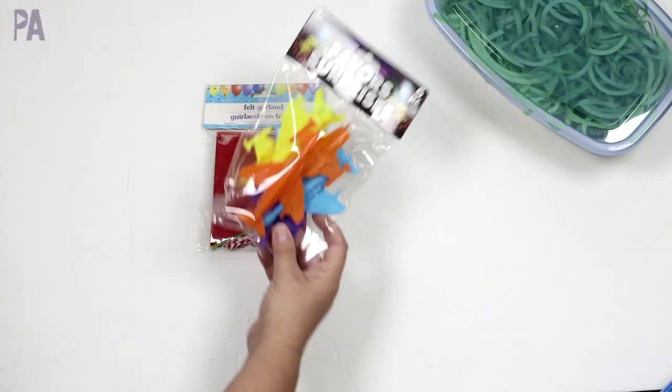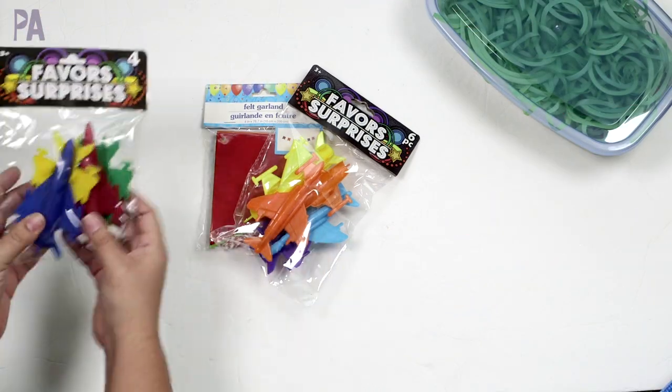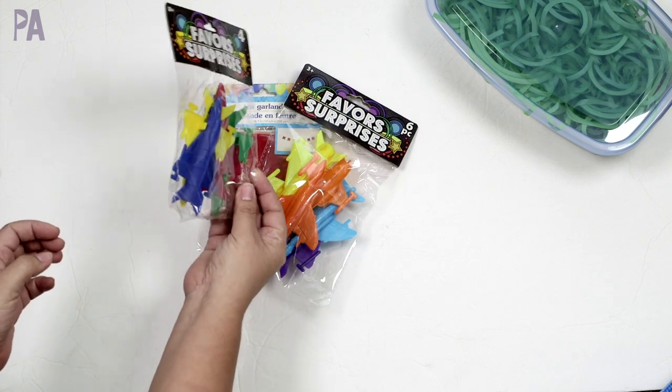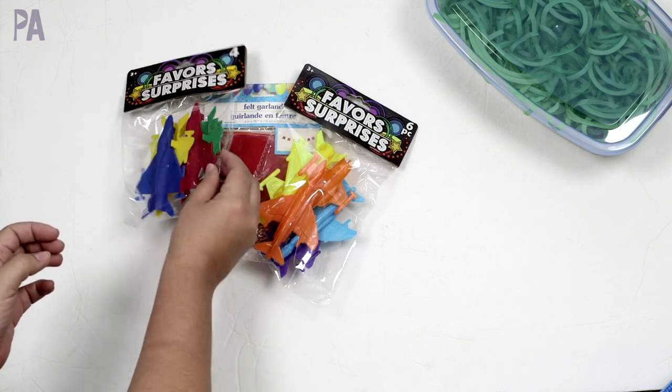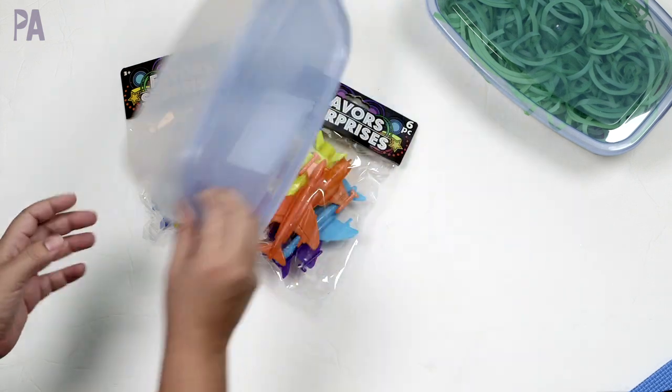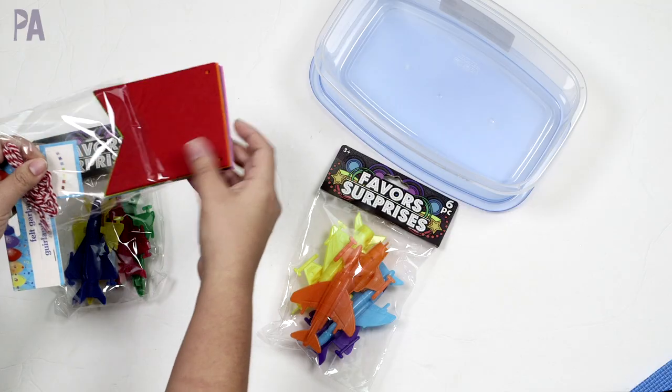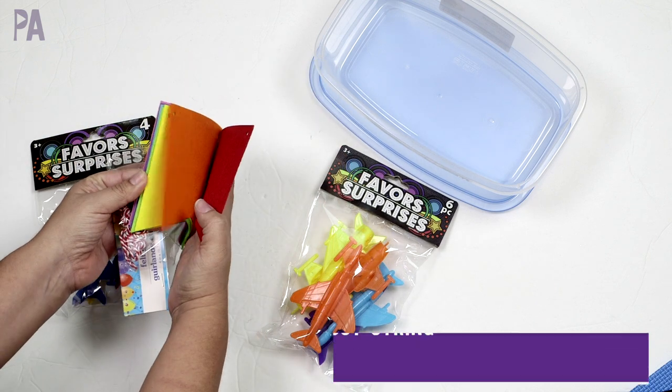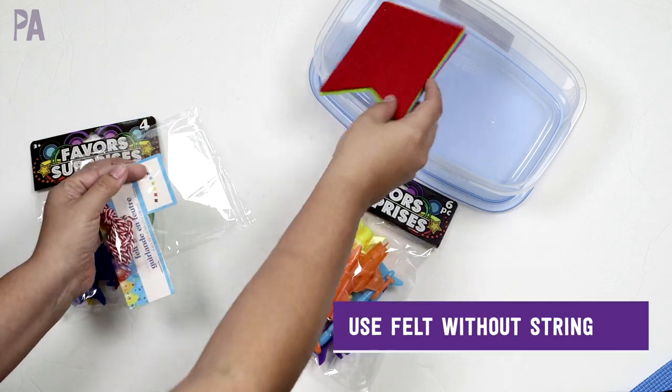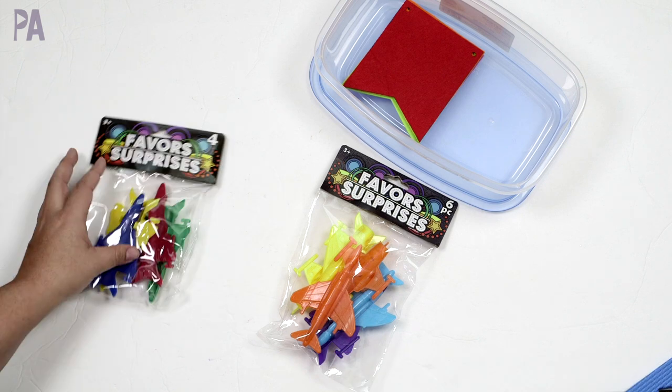So for this one, we have our felt garland and we have two packages of our airplane party favors. If you can find a different one that your child might like more, definitely do that. And then we have our little bin. For this one, you're just going to supply the felt banner. So we have one for each color. You can just put that inside your bin ready to go. How easy was that?